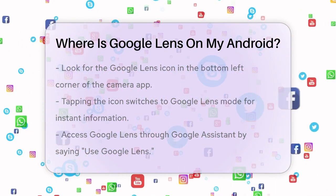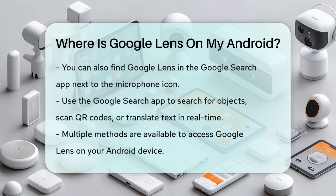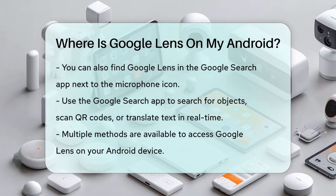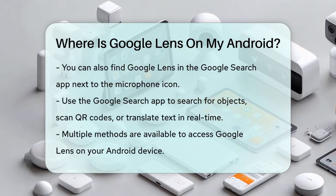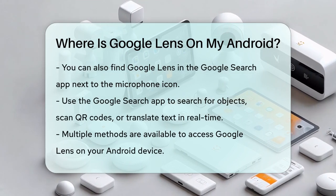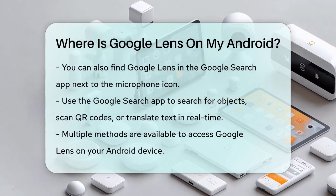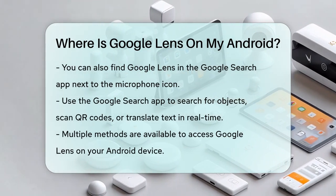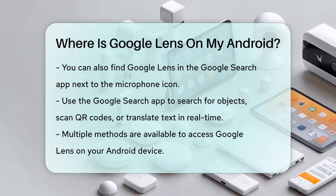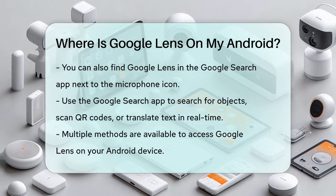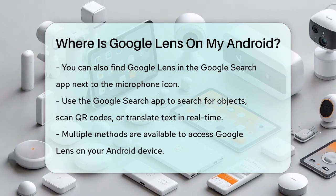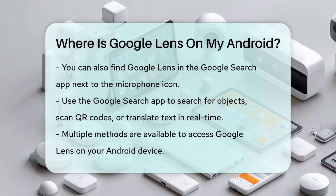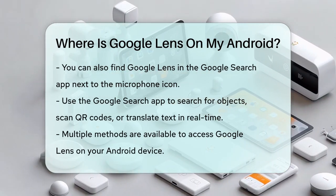Lastly, if you prefer using the Google Search app, you can access Google Lens there as well. Open the Google Search app, and you'll see the Google Lens icon next to the microphone. Tapping this icon will allow you to use your camera to search for objects, scan QR codes, or translate text in real time.